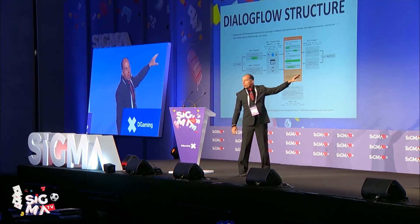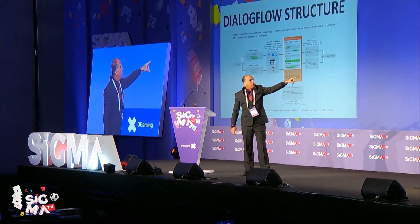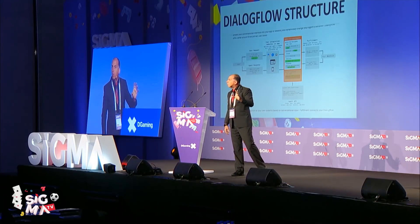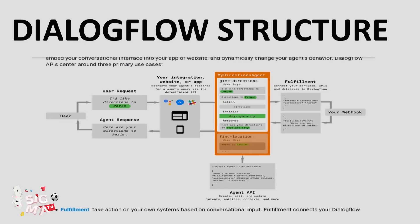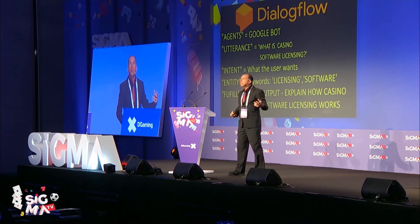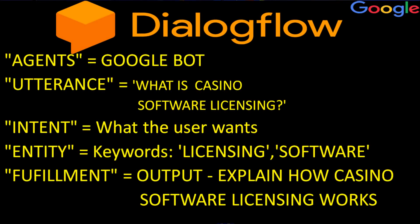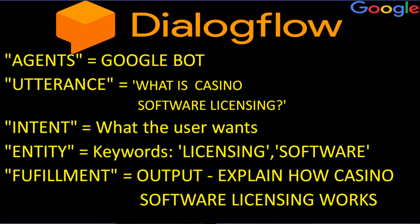How it works is pretty straightforward. The user speaks to the website or app. The API or SDK sends the audio file over to Google's Dialogflow. They interpret what was said, and using whatever you pre-programmed in advance — if a question like this is asked, provide this response — it goes back to your website and provides the response. You have to learn new vocabulary: the agent is a Google bot; the utterance is what you're saying; the intent is what the user wants; the keywords help the AI identify what's being said; and the fulfillment is the output.